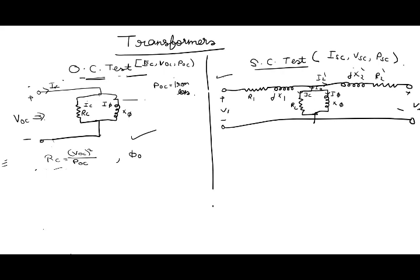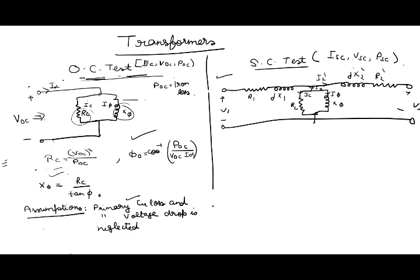And the power factor angle would be cos inverse of power upon VOC into IOC. And therefore, XM would be RC upon tan phi. So this is the core loss component, and this is the magnetizing component. And this is their value, which you can calculate from open circuit test. The assumption made is that primary copper loss and primary voltage drop is neglected because the no load current is limited to 5% of the rated current.